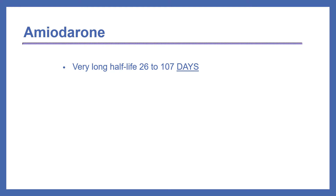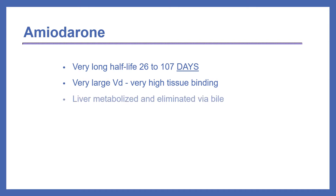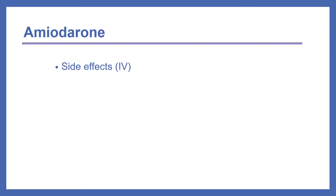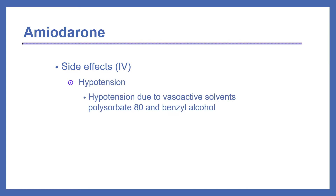Amiodarone has a very long half-life of 26 to 107 days, due to a very large volume of redistribution and very high tissue binding. It is liver metabolized and eliminated via the bile. IV side effects of amiodarone are twofold: first, it can cause hypotension — not due to the drug itself, but due to the vasoactive solvents polysorbate 80 and benzyl alcohol. The second IV side effect is bradycardia.